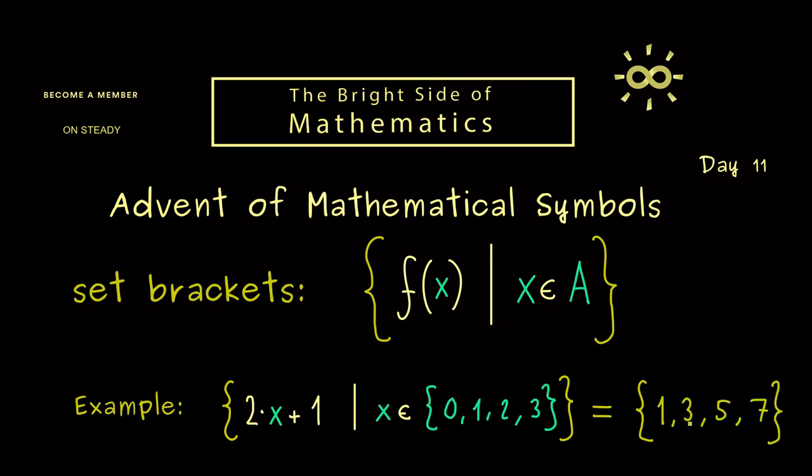Hence {1, 3, 5, 7}. For example, 7 we get when we apply this 3 here. So you see this construction is not so complicated but it occurs very often. Therefore you should know what it means.